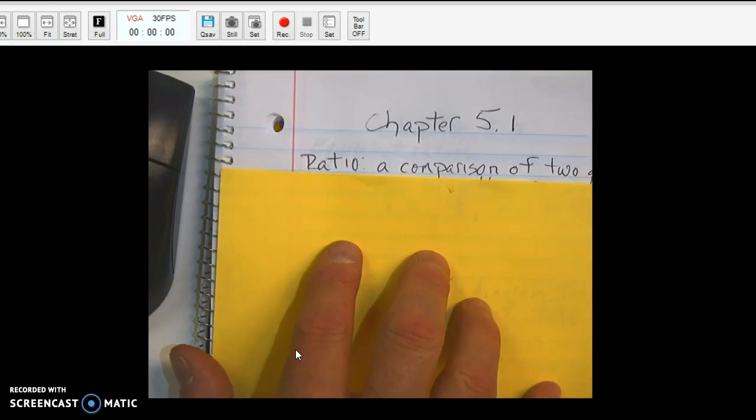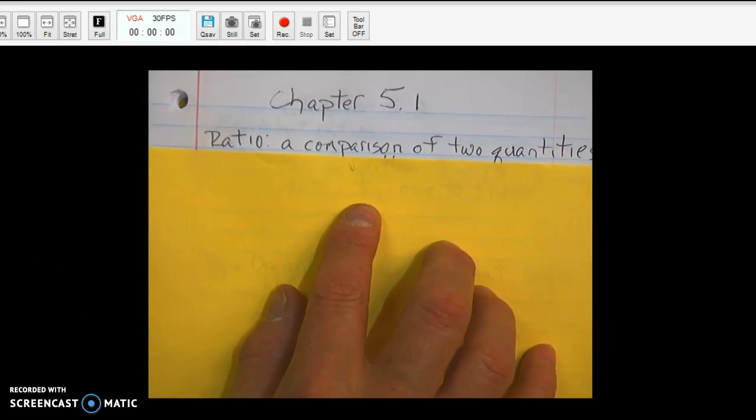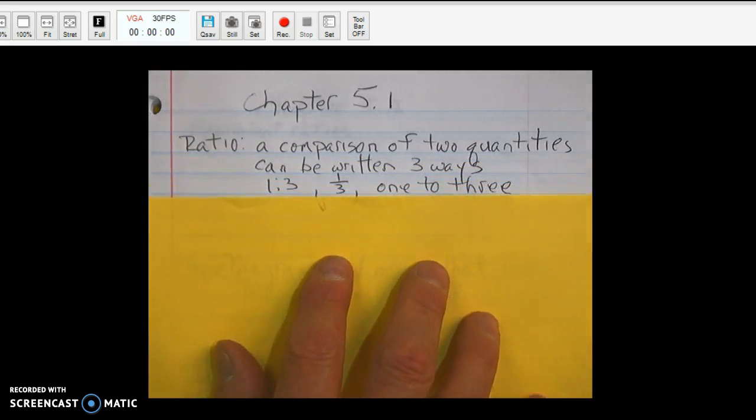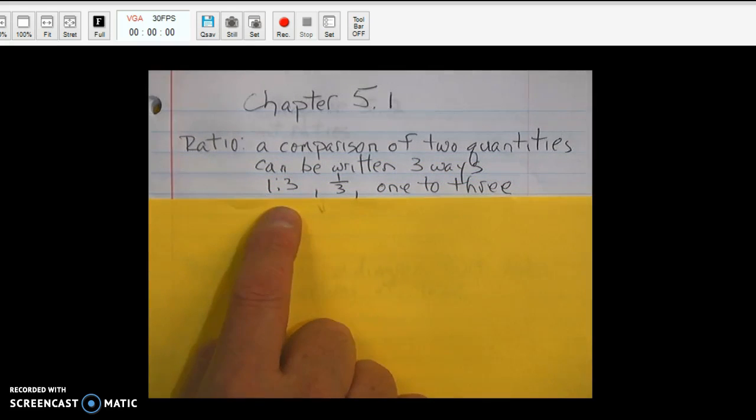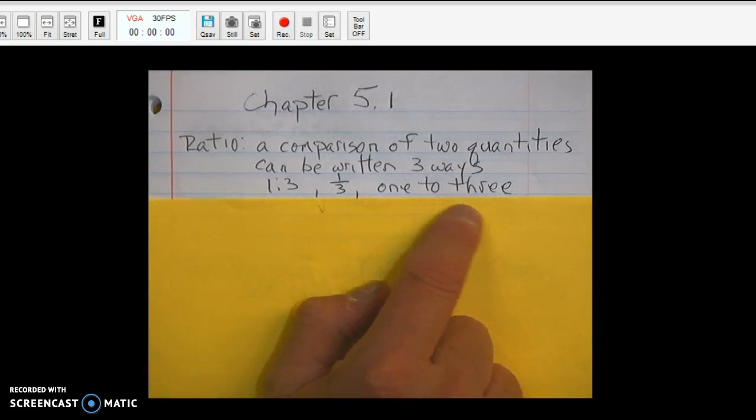The first word is Ratio. A Ratio is a comparison of two quantities. A Ratio can be written three ways: with numbers and a colon, such as 1 colon 3, as a fraction, 1 over 3, or in words, one to three.